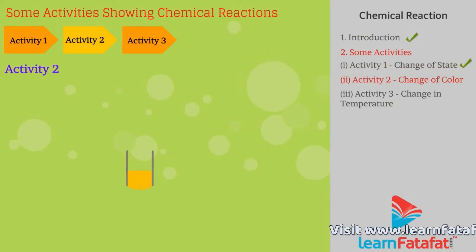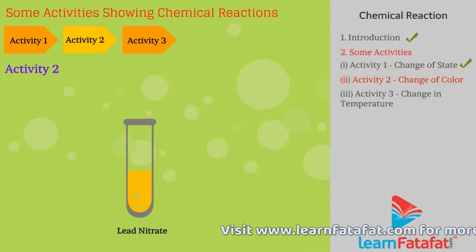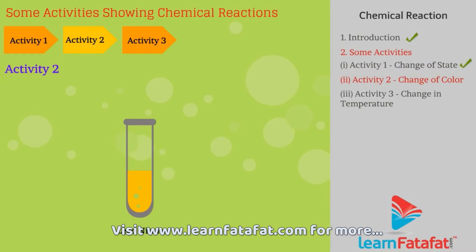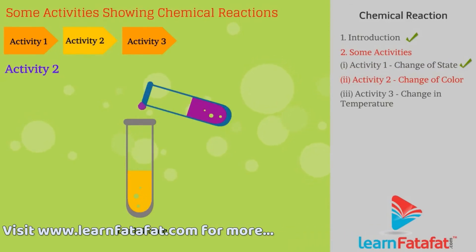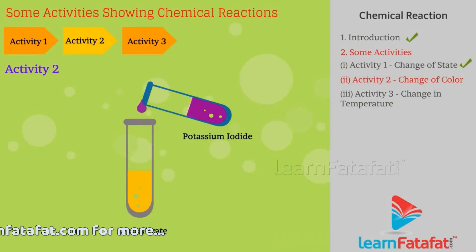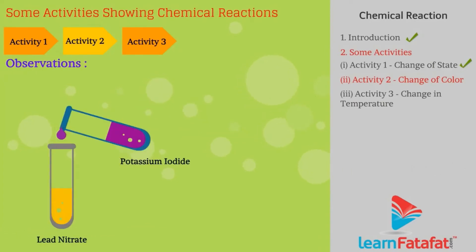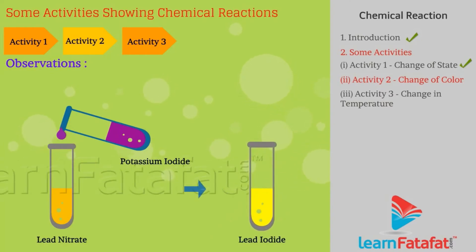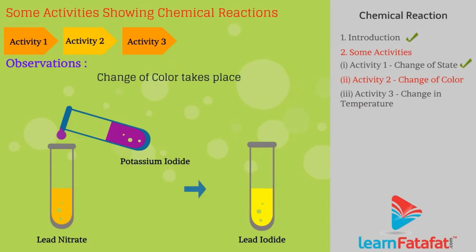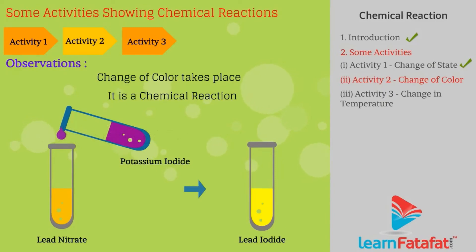Activity 2: Take lead nitrate solution and add potassium iodide solution to it. Observation: After adding lead nitrate and potassium iodide solution, it changes to yellow color, i.e., a change in color. Therefore, it is a chemical reaction.